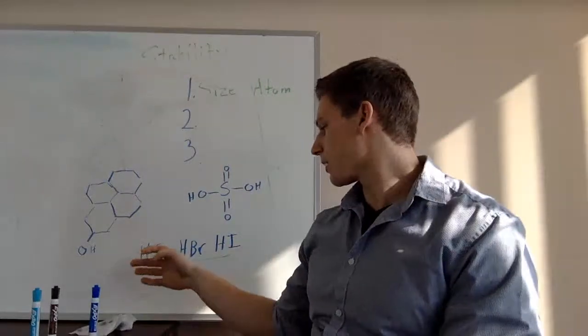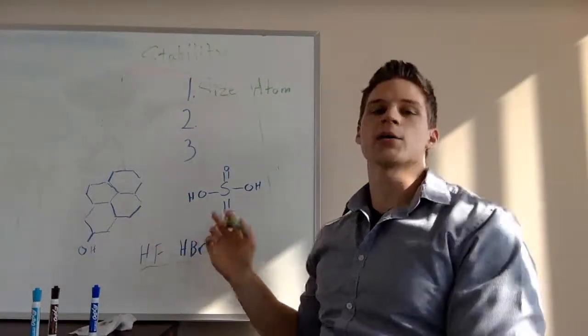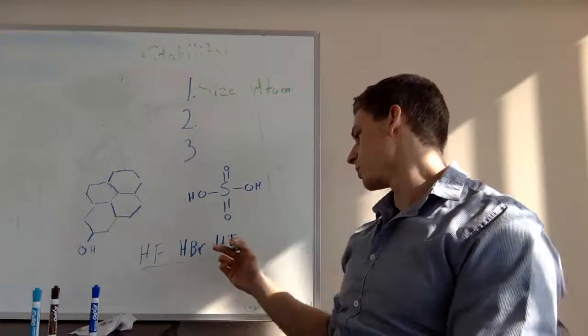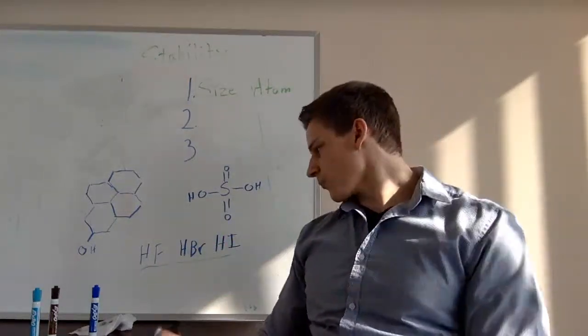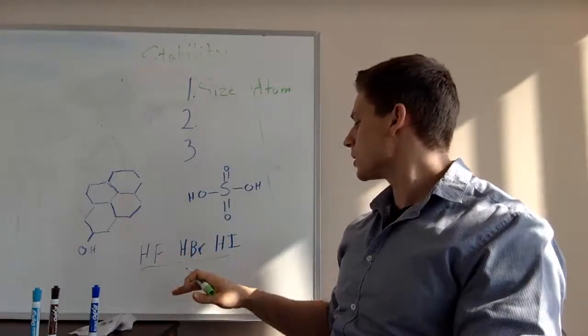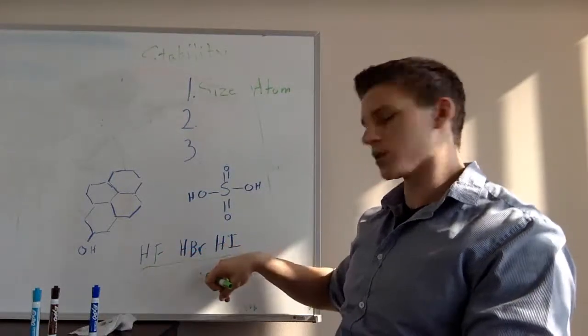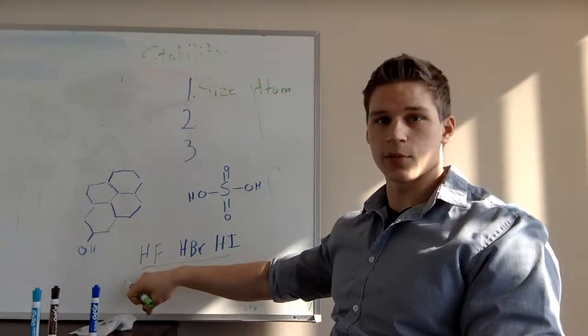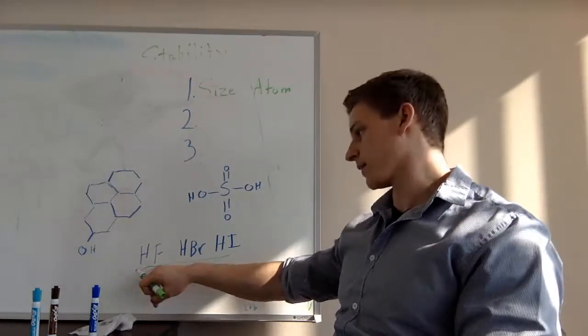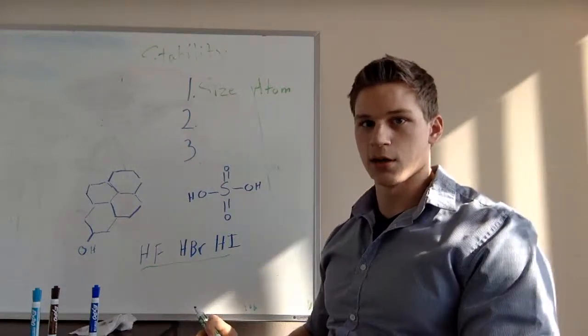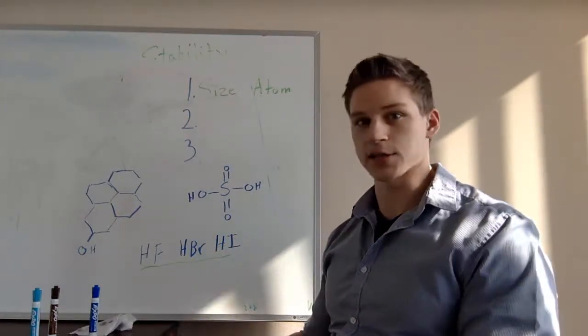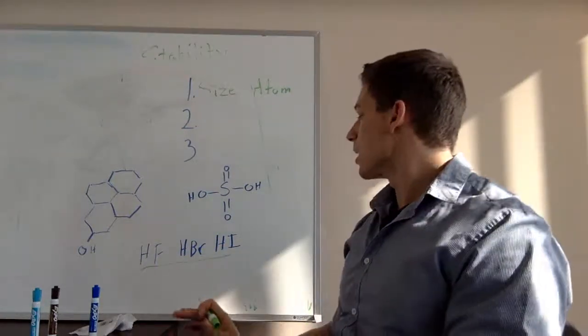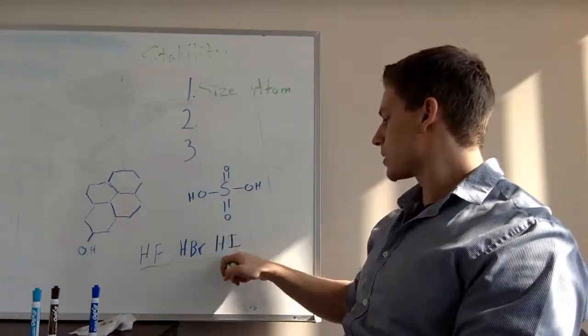So the first one is the size of the atom that the charge is on. Let's take this example down here: we have hydrofluoric acid, hydrobromic acid, hydroiodic acid. Which one is the most acidic? As you know, it is hydroiodic acid. I'm going to get more into the specifics, but this completely deprotonates. This completely deprotonates. This does not completely deprotonate, although it is very toxic.